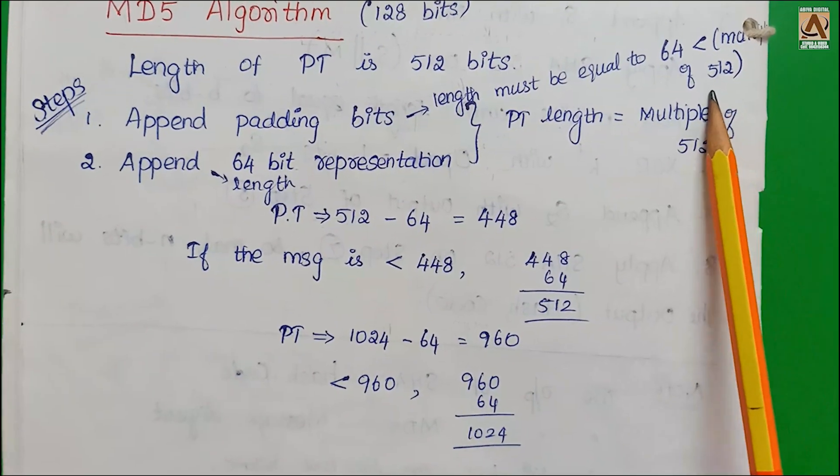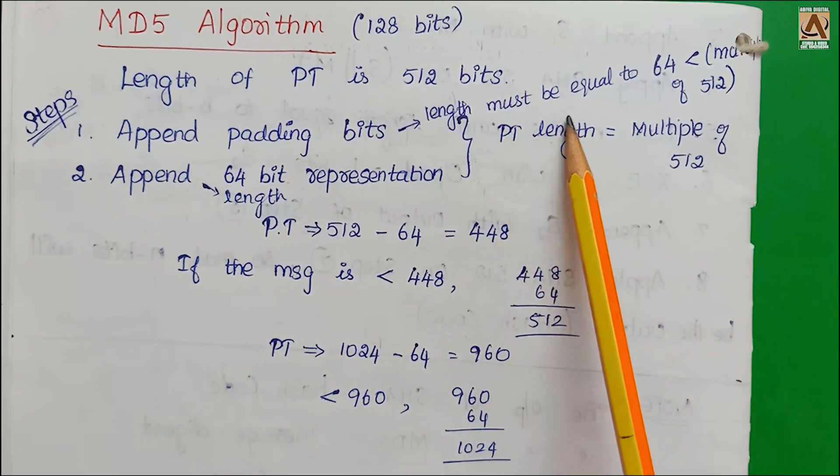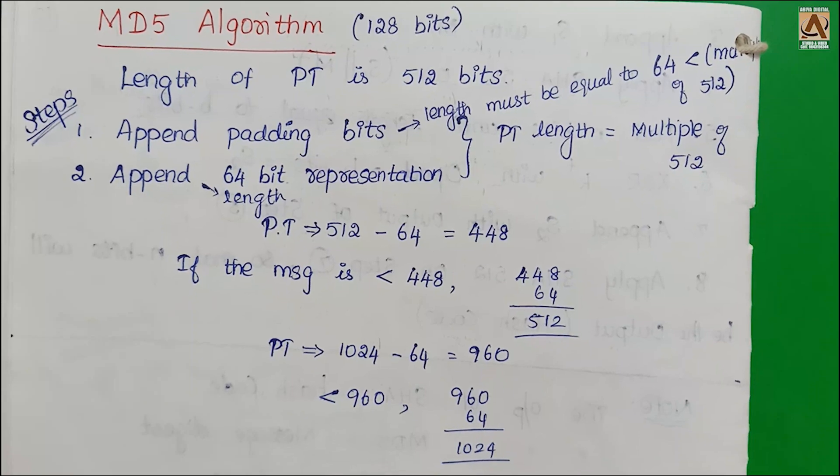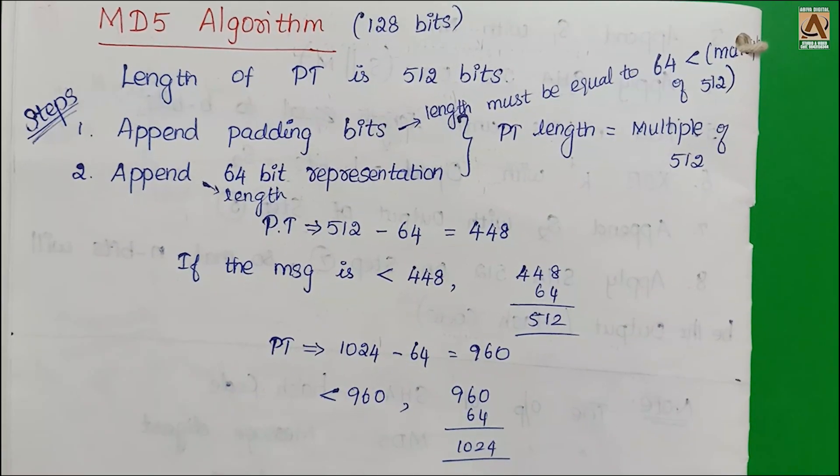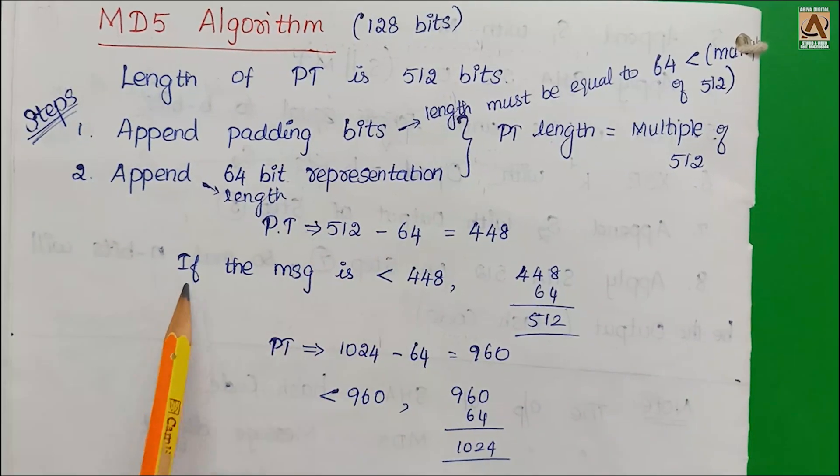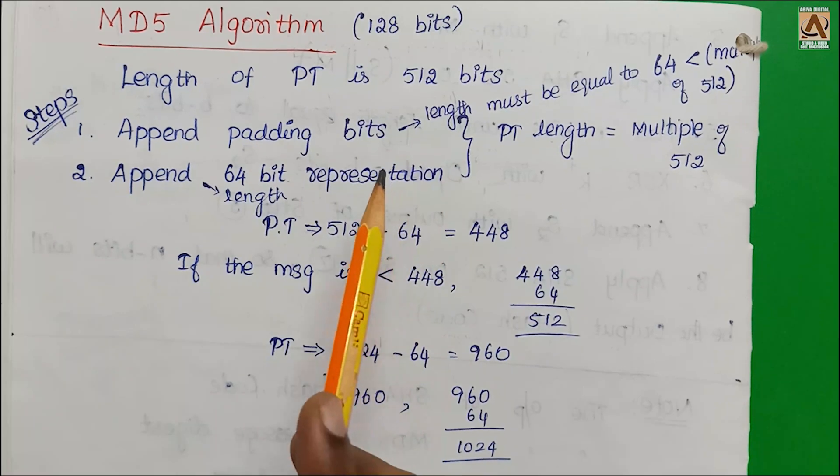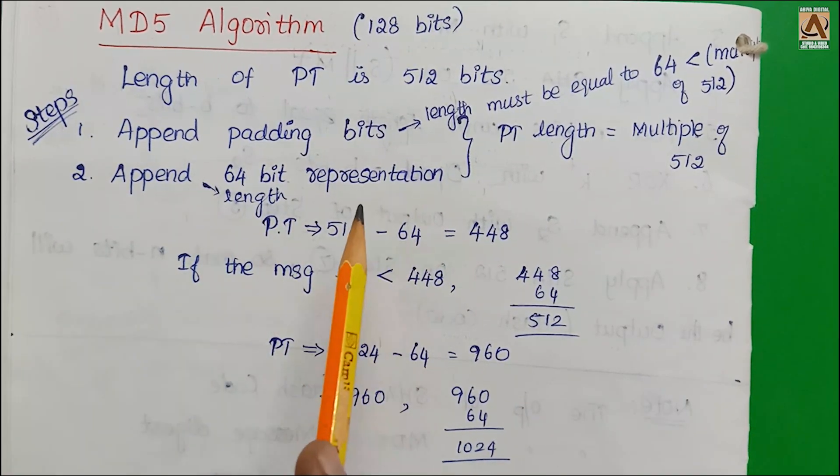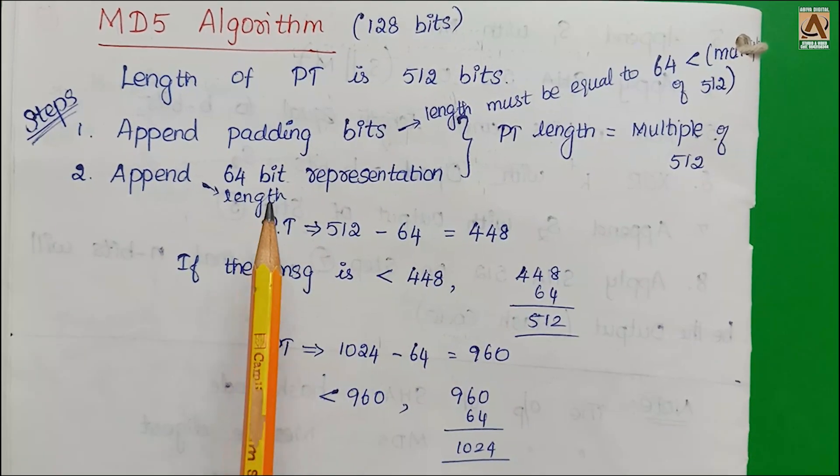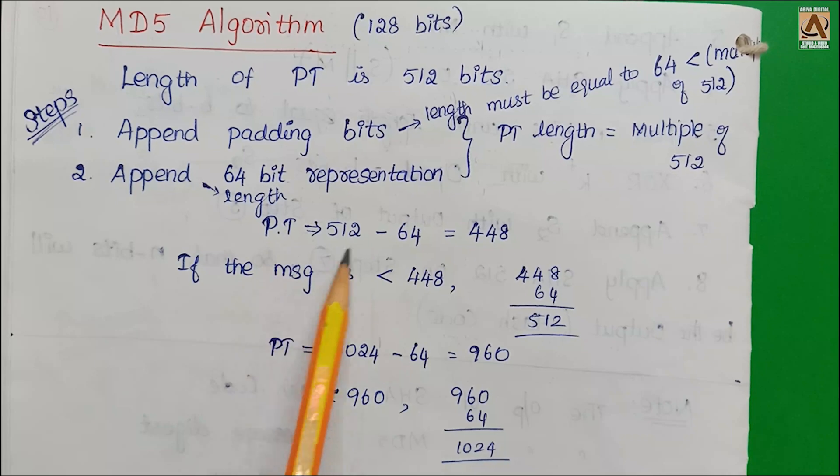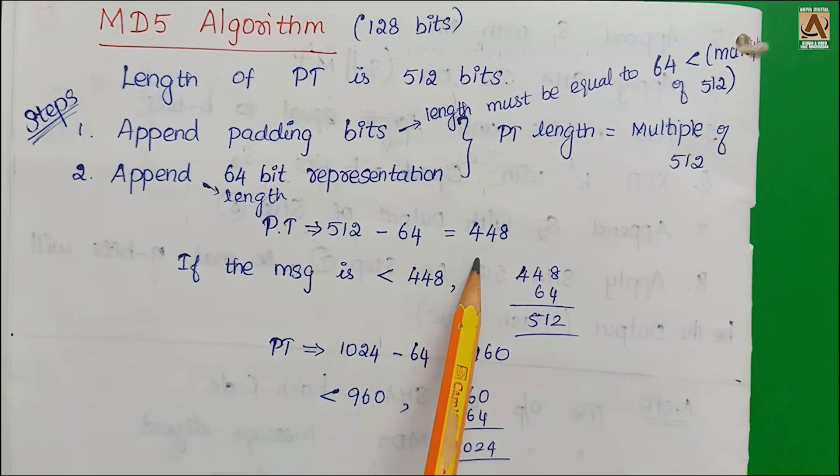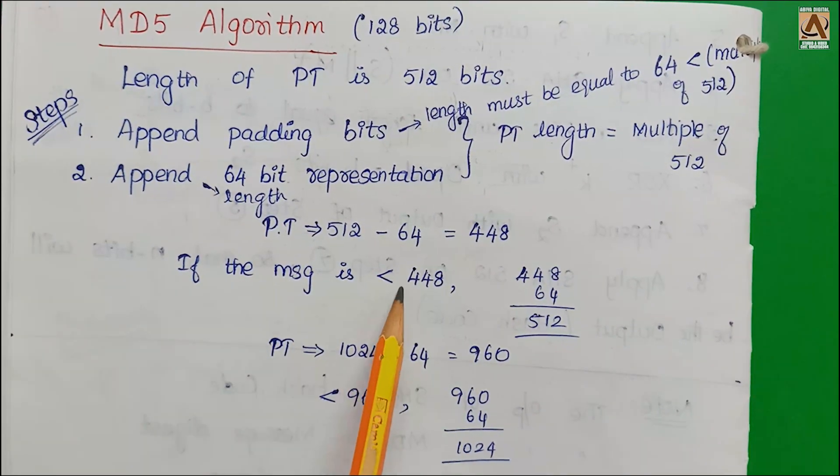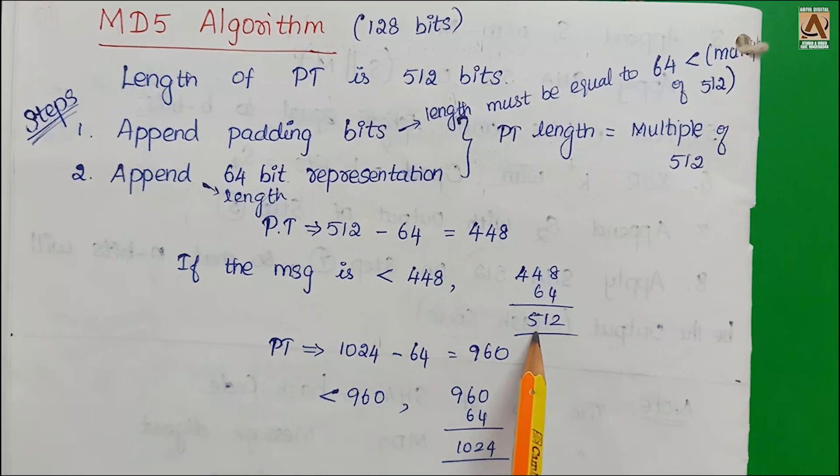The length will be multiples of 512 and should be 64 less than a multiple of 512. Plaintext equals multiple of 512 bits. Next, we append 64-bit representation. In case plaintext is not a multiple of 512, plaintext is 512 minus 64 equals 448 bits. If the message is less than 448, we add bits.